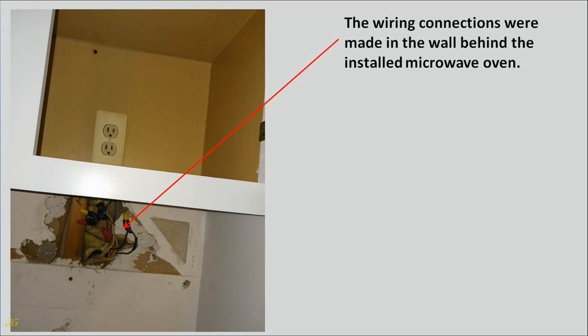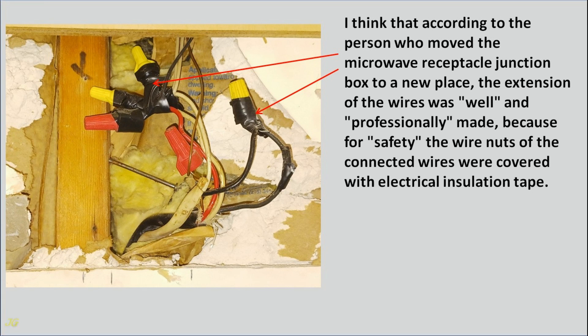The wiring connections were made in the wall behind the installed microwave oven. I think that according to the person who moved the microwave receptacle junction box to a new place, the extension of the wires was well and professionally made because, for safety, the wire nuts of the connected wires were covered with electrical insulation tape.